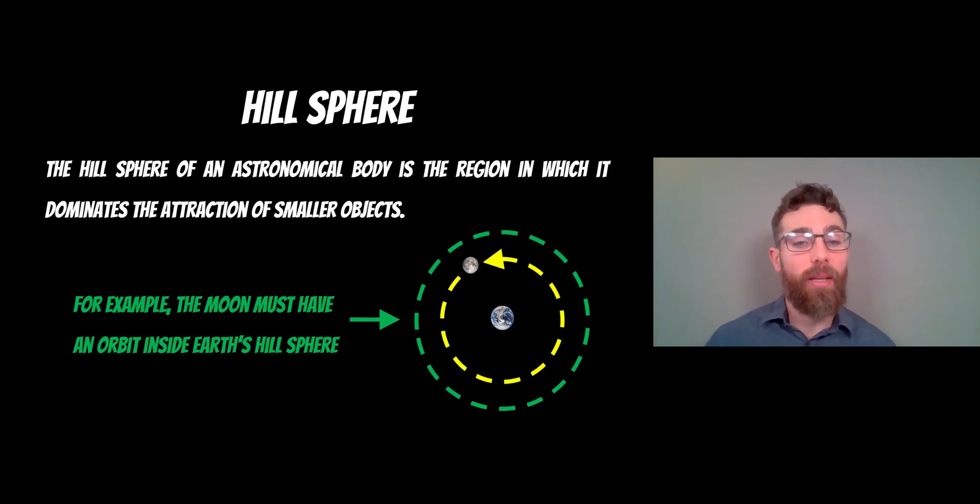So the Moon is gravitationally bound to the Earth and that happens with all moons. They have to be within this hill sphere to be on an orbit and be gravitationally bound to it. If it's outside the hill sphere, it's not going to be gravitationally bound by it or influenced by it. It would be influenced by a much larger mass, for example the Sun.